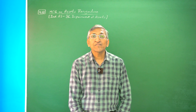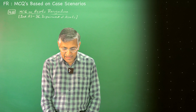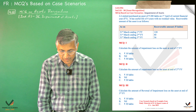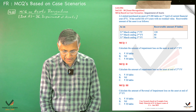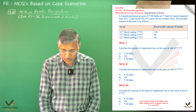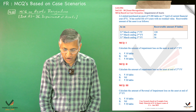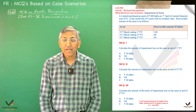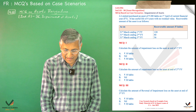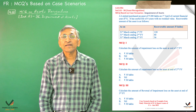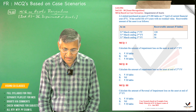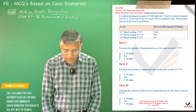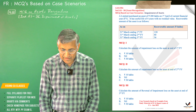Let us see the data given in this scenario. A company purchased an asset for Rs. 200 lakhs on 1st April of the current financial year. It has a useful life of 4 years with no residual value. The recoverable amounts of the asset are given as at 31st March ending 1st, 2nd, and 3rd financial years. The recoverable amounts are Rs. 120 lakhs, Rs. 80 lakhs, and Rs. 56 lakhs. Depreciation is provided on a straight-line method under the cost model.